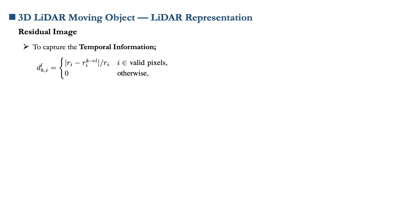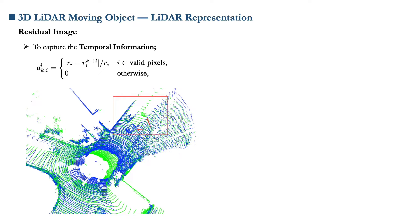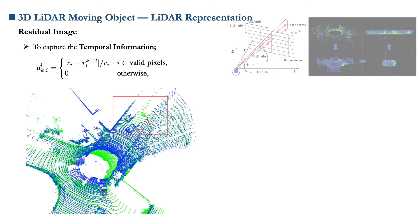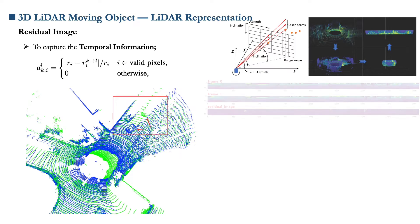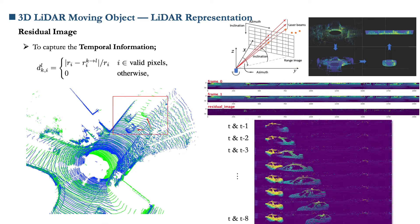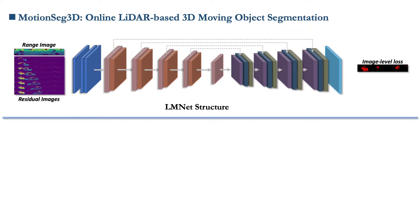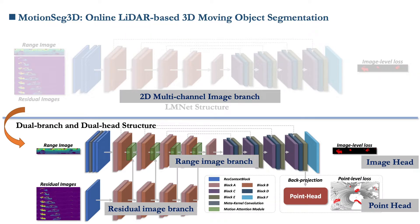We follow the residual image representation of LMNet. Given scans of two consecutive frames, we first convert them to the same coordinate system using pose, then project them to the range view and subtract the values of corresponding pixels to obtain the residual map. In LMNet, the range image and residual image are concatenated as multiple channels and fed into existing range image segmentation networks such as SalsaNext or RangeNet++. In our method, a two-branch structure is adopted to fuse the two modalities from a higher feature dimension, so that the hidden motion information in the residual image can be well-processed and modeled.